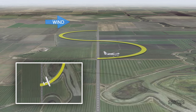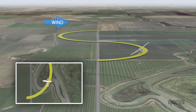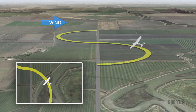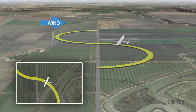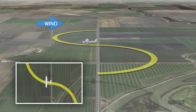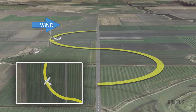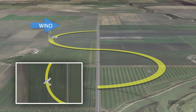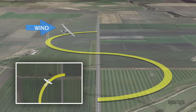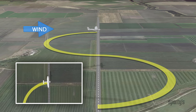The maneuver starts at a right angle to the road. Over the road, a 180-degree turn is made to trace a uniform semicircle, completing the turn over the road with wings level at a right angle to the road. Then a turn in the opposite direction is immediately started to trace an identical semicircle on the other side. This turn is finished when the airplane is again wings level over the road.